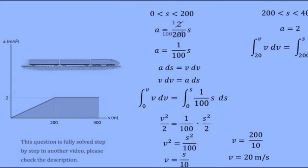Which are 200 meters and 20 meters per second. Solve this integral and then isolate for v. Now you can plot the velocity versus displacement graph.